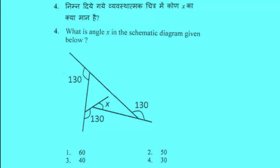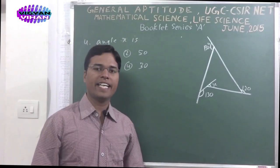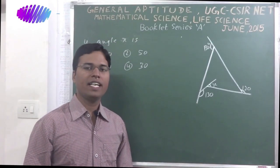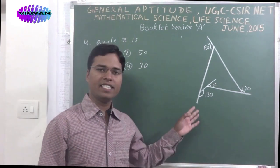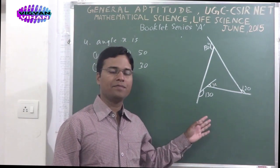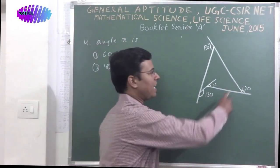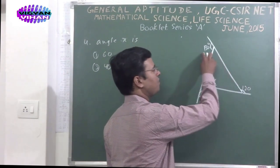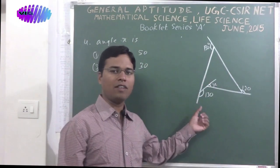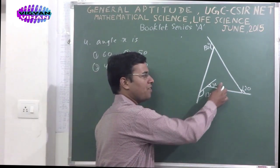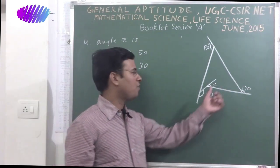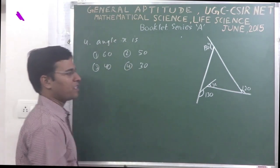The fourth problem: What is angle x in the schematic diagram given below? There are 4 options: 60, 50, 40, 30. Friends, the next problem is problem number 4. In the given problem, there is a schematic diagram where some angles are given: 130, 130, 130. We would have to calculate the value of unknown angle x. There are 4 options.